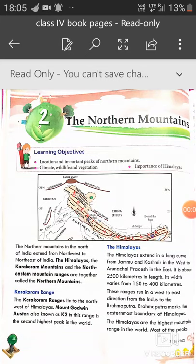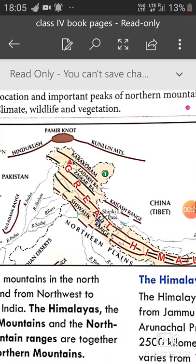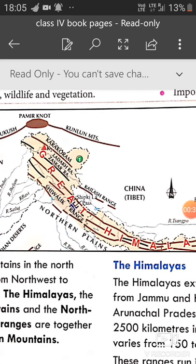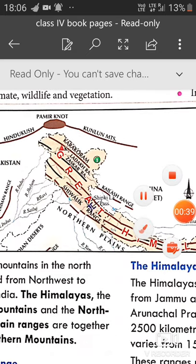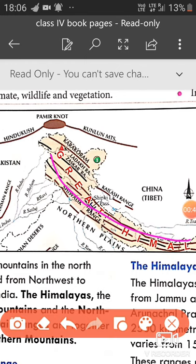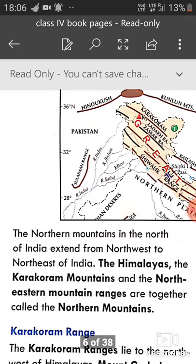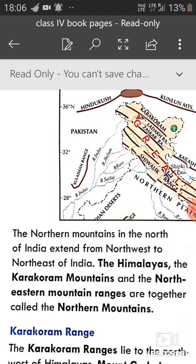Good morning class. Today we are going to start a new chapter — we are revising the chapter on Northern Mountains. I have shown you videos of Northern Mountains, and now we are starting reading of our chapter. The Northern Mountains in the north of India extend from north-west to north-east of India. It stretches from Jammu and Kashmir in the west to Arunachal Pradesh in the east.